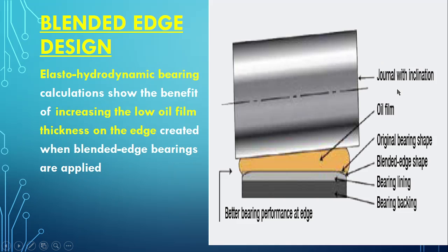This journal inclination in large engines was causing edge loading — meaning on the edge of the crankshaft there was a huge load impact, which was causing problems. To overcome that and to provide elasto-hydrodynamic lubrication, they came up with the blended edge design. This design provides increased oil film thickness at the edge. The curvature formed at the end increases the oil film thickness, so even when the bearing is inclined, lubrication continues and edge loading is prevented.